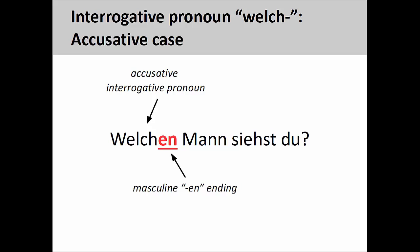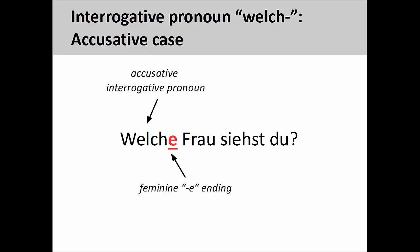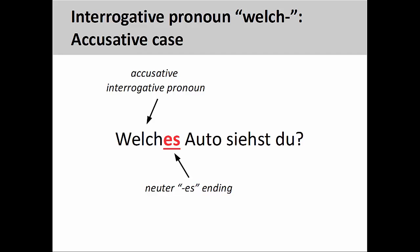And here, the masculine -en ending indicates that 'welchen Mann' is the direct object of the verb, and therefore in the accusative case. The feminine -e ending could be either nominative or accusative, but the presence of 'du,' a nominative personal pronoun, suggests that 'welche Frau' functions as the direct object and is therefore in the accusative case. Likewise, the neuter -es ending could be either nominative or accusative, but the presence of 'du' also shows that 'welches Auto' must be in the accusative case.